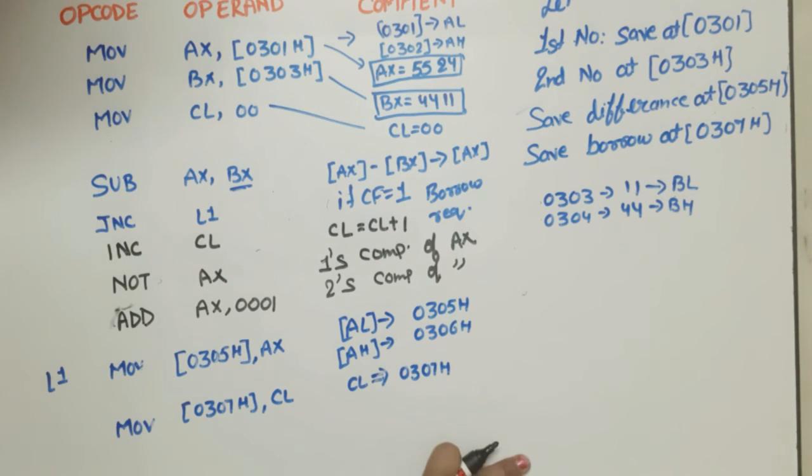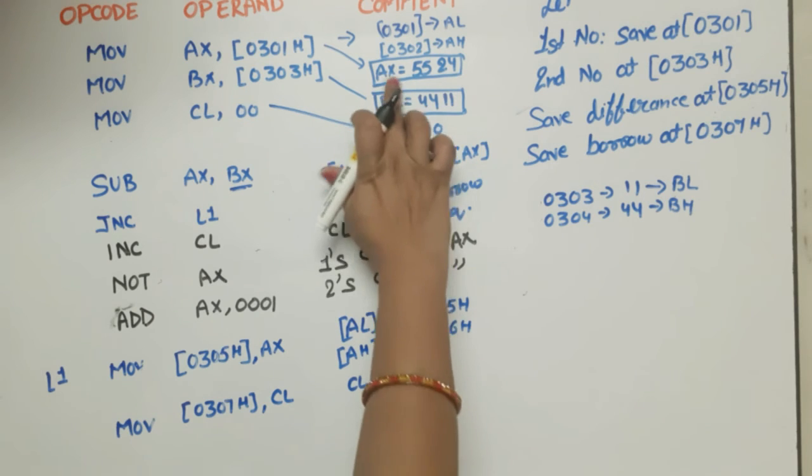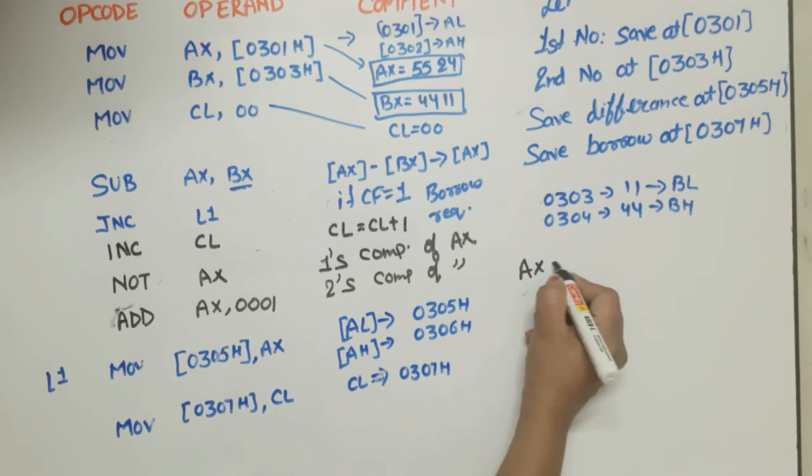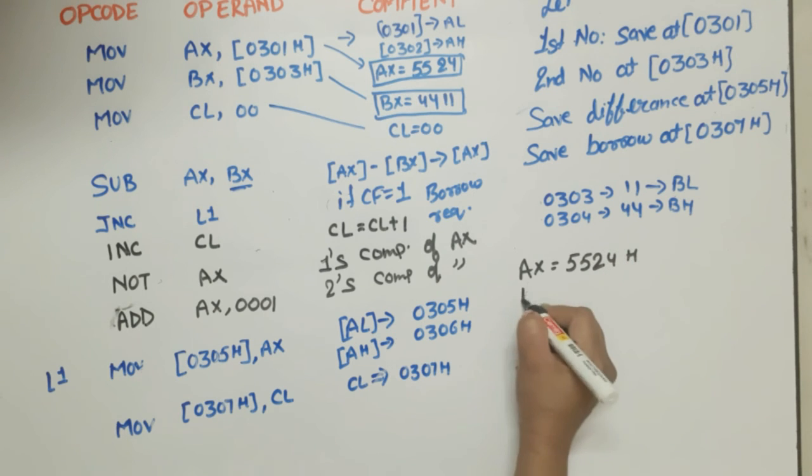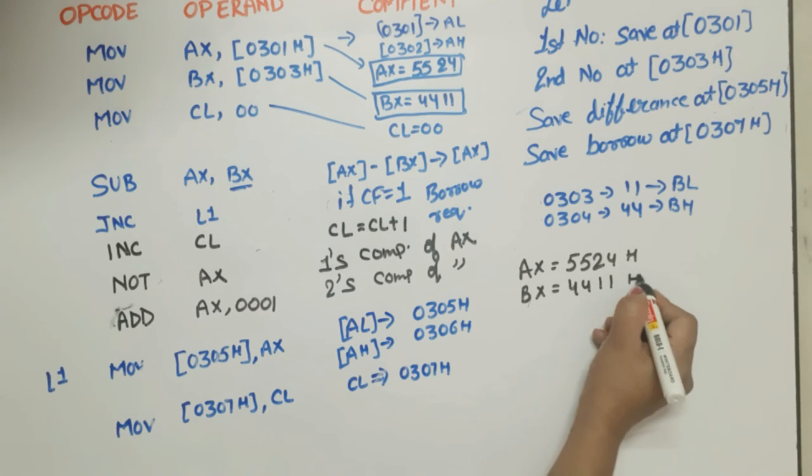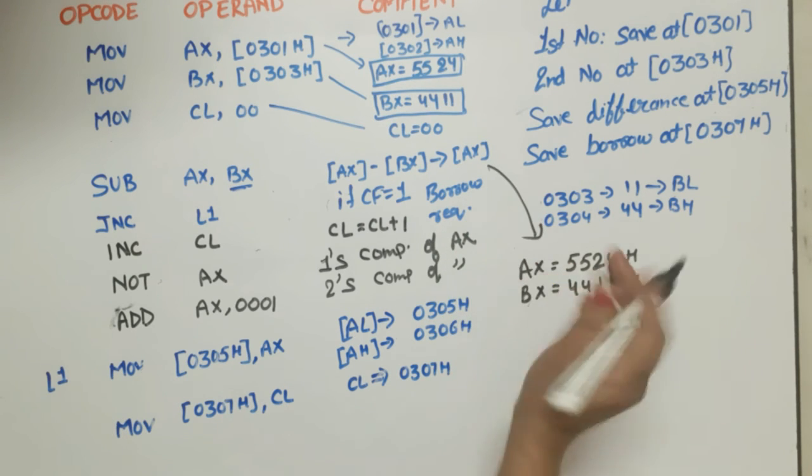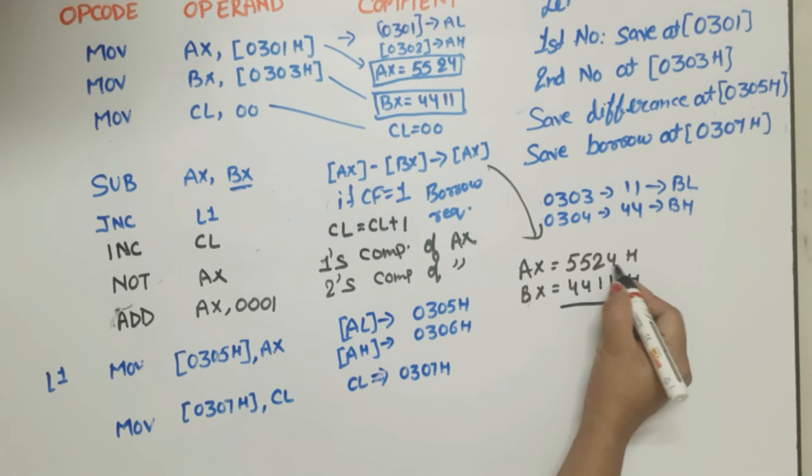So let's check an example. For this, what were our values? We had written AX stored 5524h and what is the value of BX? BX had 4411h. So on this line what will happen? Subtraction of both. 4 minus 1 is 3, 2 minus 1 is 1, 5 minus 4 is 1, 5 minus 4 is 1.